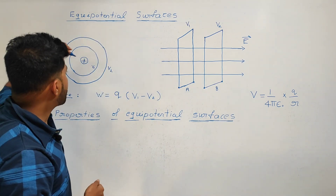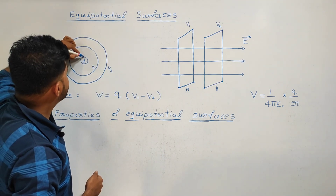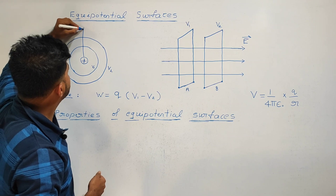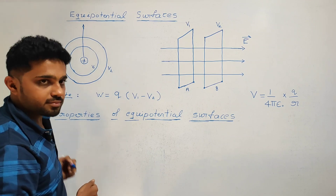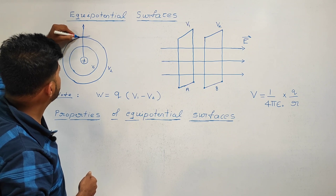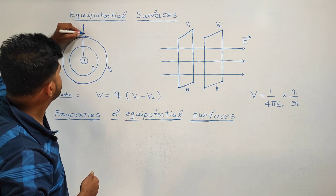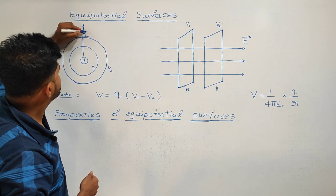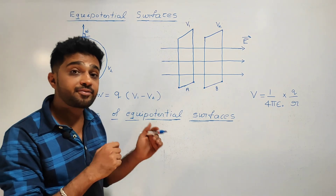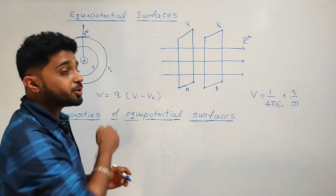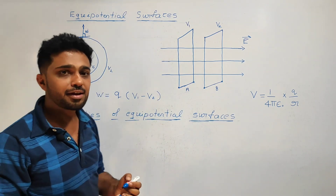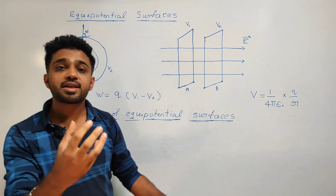For a positive charge, the electric field goes radially outwards. In this diagram, the electric field is radially outward, and the equipotential surface is perpendicular to the electric field. This is the second property.